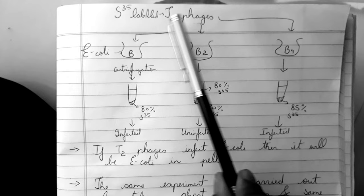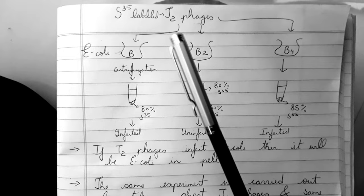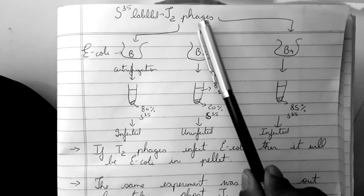So the proteins of the T2 phages were labeled. He incubated this T2 phages with three different strains of E. coli that is B, B2 and B4 because the E. coli is the host of T2 phages.